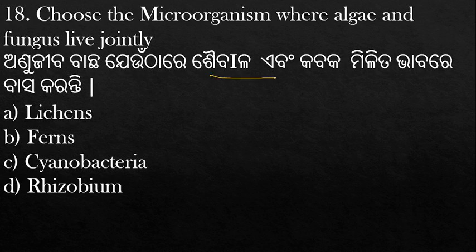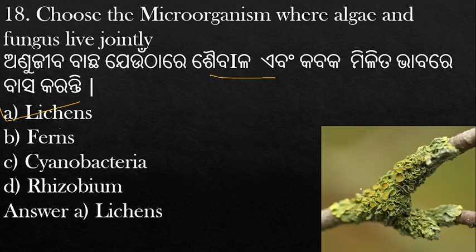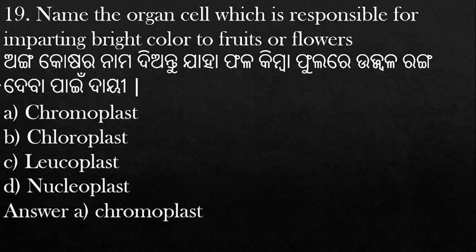Which microorganism is a combination of algae and fungus living together? The answer is lichen — lichens are found in soil and consist of both algae and fungus. Which plastid is responsible for imparting bright color to fruits and flowers? The answer is chromoplast.